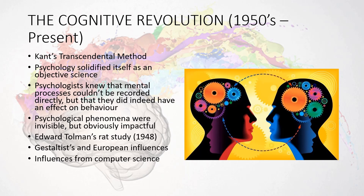Psychological phenomena were clearly present and impactful, but difficult to figure out. One of the first key studies was Edward Tolman's rat study in 1948. It showed that rats could map out a maze after spending 10 days in it with no direction — and when food was placed on the 10th day, they knew exactly how to get there. The point is that the rats used invisible mental processes to form what are called cognitive maps, which explained their behavior.